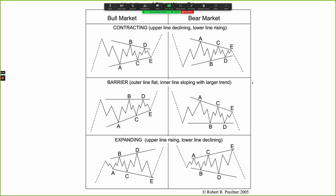Here are examples of the different variations of triangles: contracting triangles, barrier triangles, and expanding triangles. In the barrier variation, you will only get an ascending barrier triangle in an uptrend — where the BD trendline is essentially flat with zero degree slope while the AC trendline slopes upward. In a bear market, you get a descending barrier triangle only, where the BD trendline is flat and the AC trendline is sloping lower. With the expanding triangle, wave B makes a new price extreme, wave C makes a new price extreme below wave A, wave D makes a new price extreme above wave B, and wave E makes a new price extreme below wave C — and this is exceedingly rare.